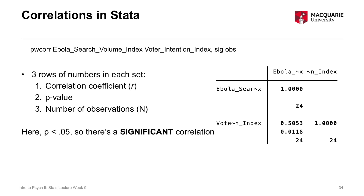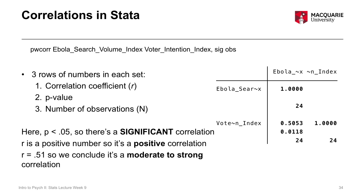In conclusion: our p-value is less than 0.05, so this is a statistically significant correlation. Our r is a positive number, meaning it's a positive correlation, and our correlation coefficient is 0.51, so we can conclude it's a moderate to strong correlation. The fact that it's 0.51 doesn't mean it's magically strong as opposed to 0.49 which would be magically moderate — that's why I'm saying moderate to strong.